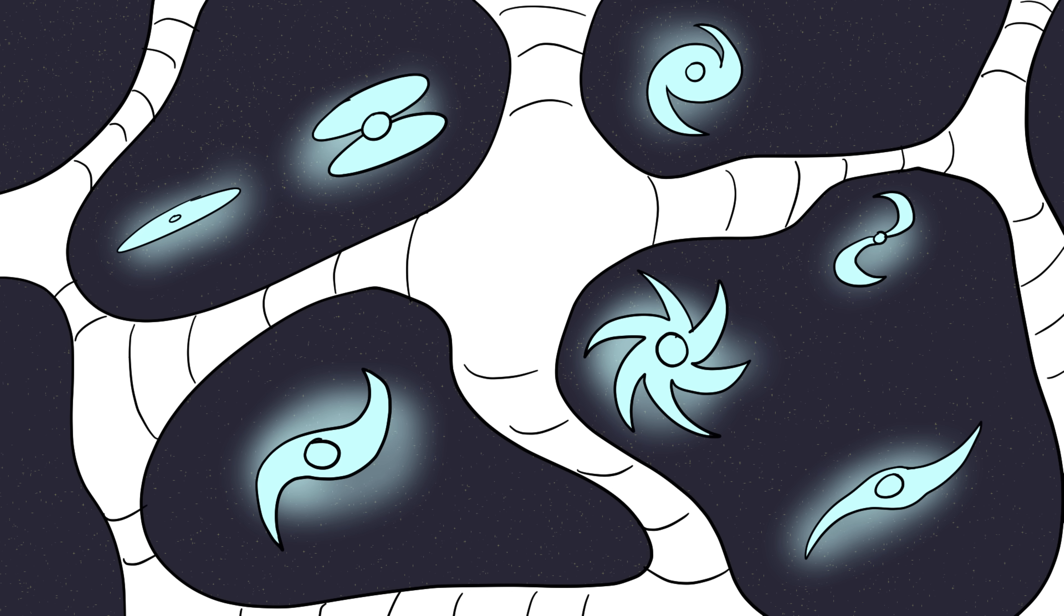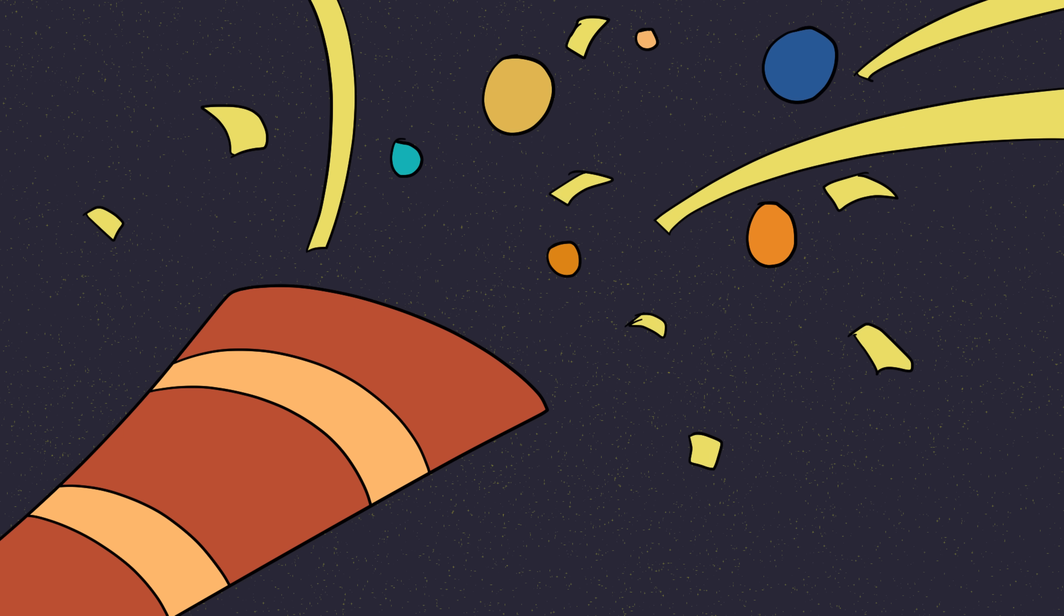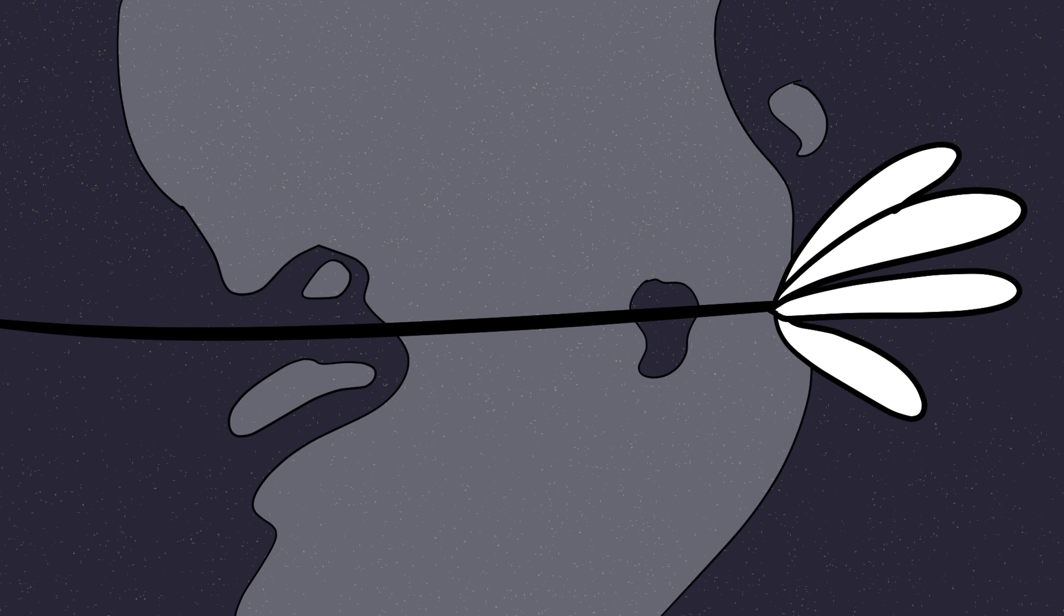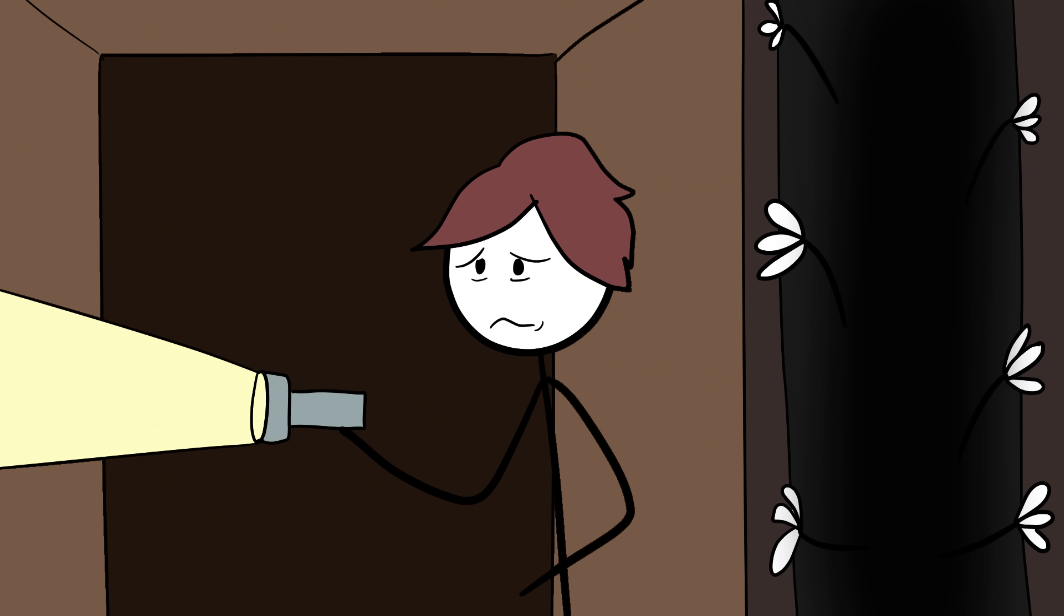Dark matter is like an invisible skeleton holding galaxies together. Without it, the stars would just fly apart like confetti. We can't touch it, see it, or interact with it, but it's literally shaping the universe around us. Imagine walking through a haunted house and realizing that invisible hands are holding up the walls. Creepy, right?